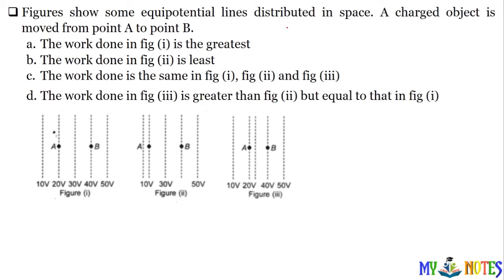Next question: figure shows some equipotential lines distributed in space. A charged object is moved from A to B. The work done — object ko A se B ki taraf move kar rahe hain. To yeh ho gaya 'from' aur yeh ho gaya 'to'. Potential at B minus potential at A is equal to work done upon the amount of charge transferred.